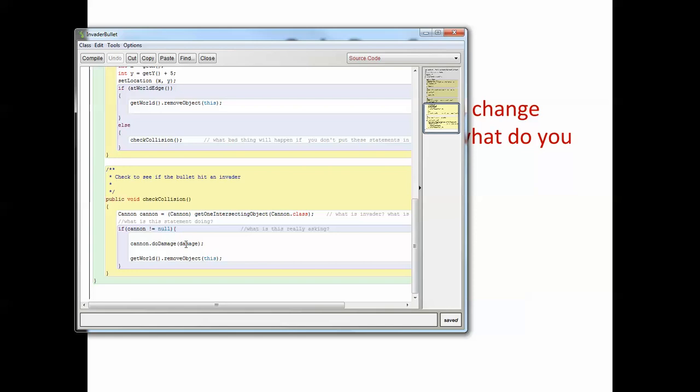And then once you have the guy in the box, then you can ask him. You say, hey, cannon, do damage damage. And the cannon already knows how to do damage because that is a method. So whenever we want one guy, like an invader bullet, to change something about another guy, like a cannon, we do it by getting the guy in a box and then by using a method call.